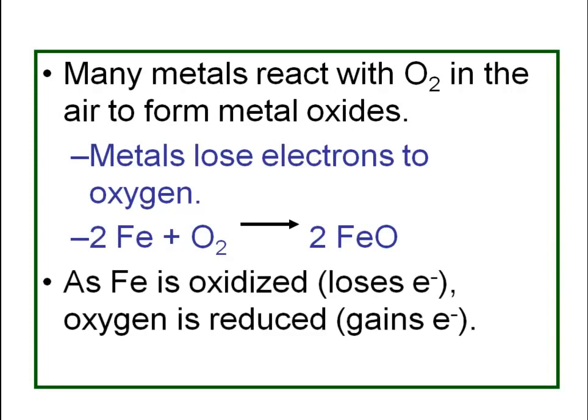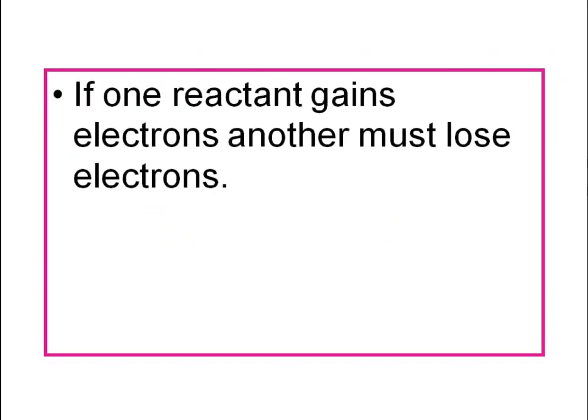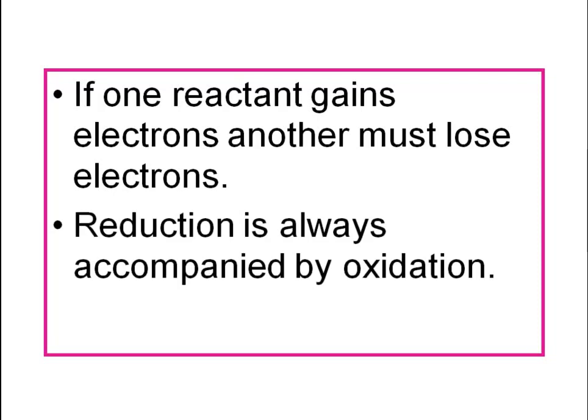When this reaction takes place, the iron is oxidized because it gives electrons to oxygen — so the iron will lose electrons. Oxygen is reduced because it's gaining the electrons from the iron. If one reactant gains electrons, another must lose electrons. So you cannot have oxidation without reduction and vice versa.